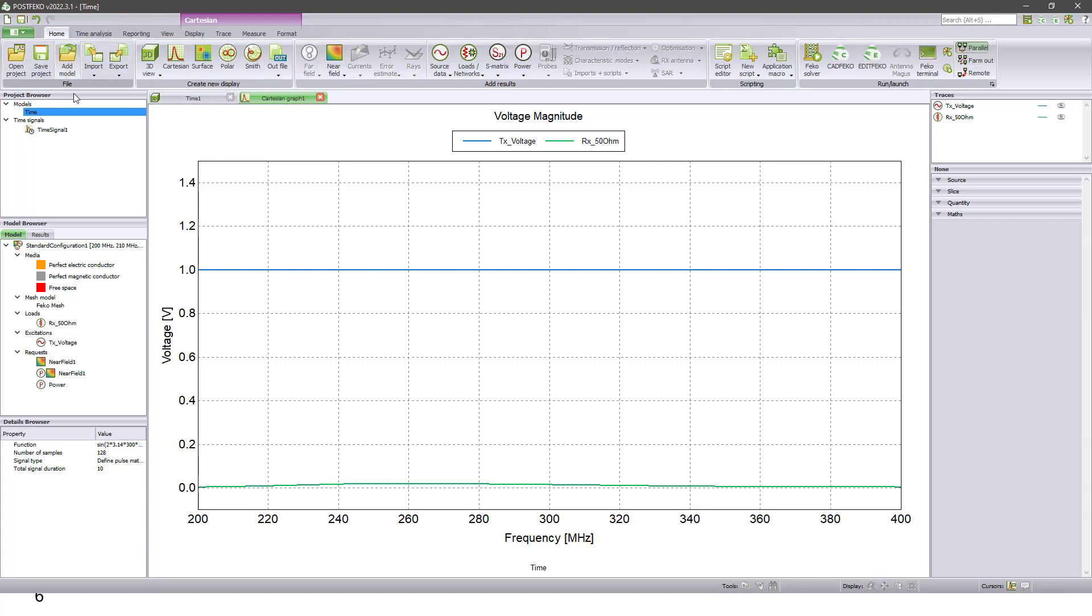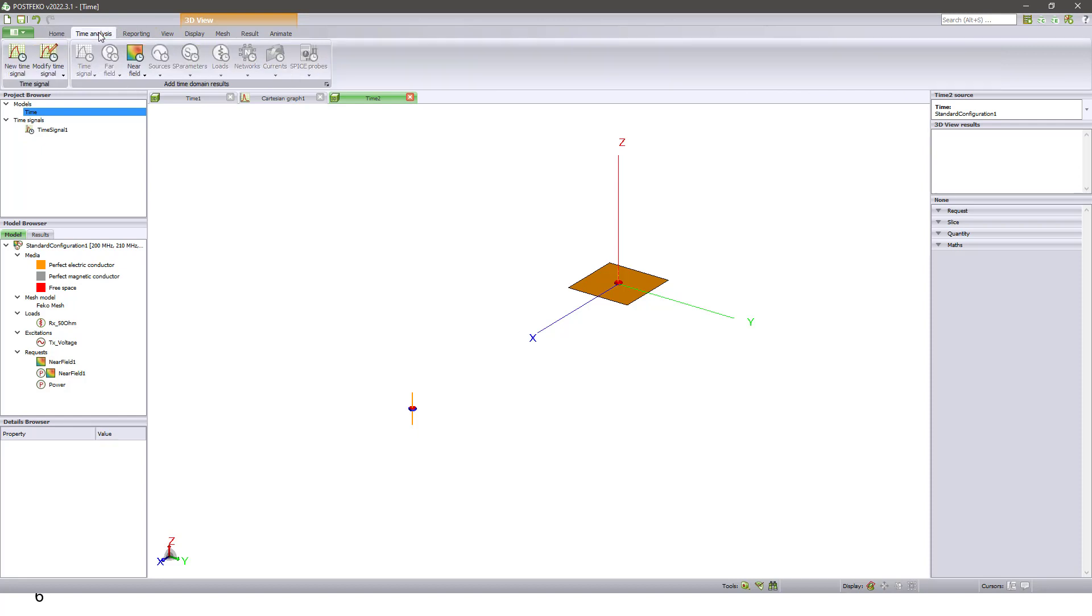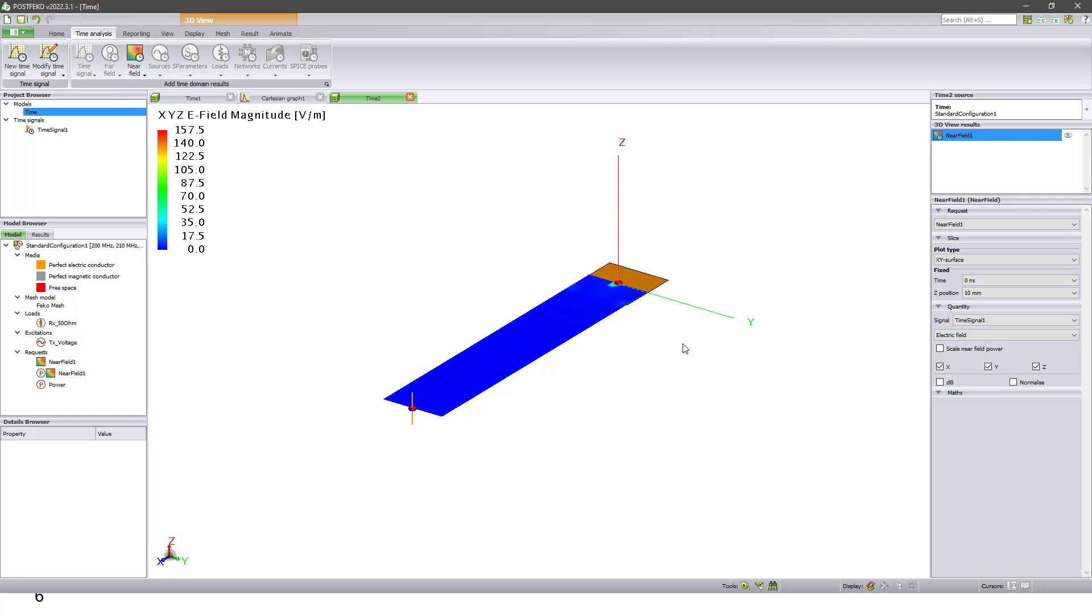So to display the near field, you need to open 3D view. And then you need to go to time analysis tab and then display the near field. Near field is displayed in time domain.